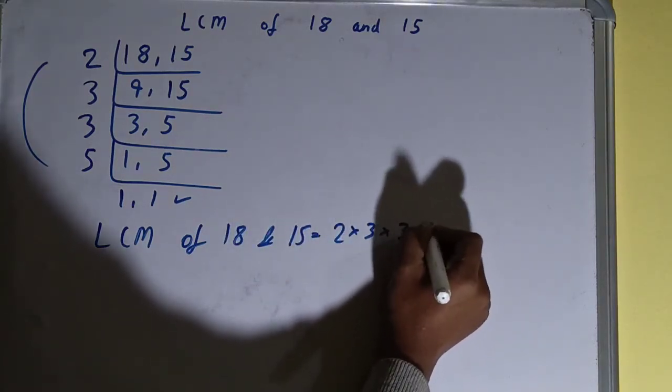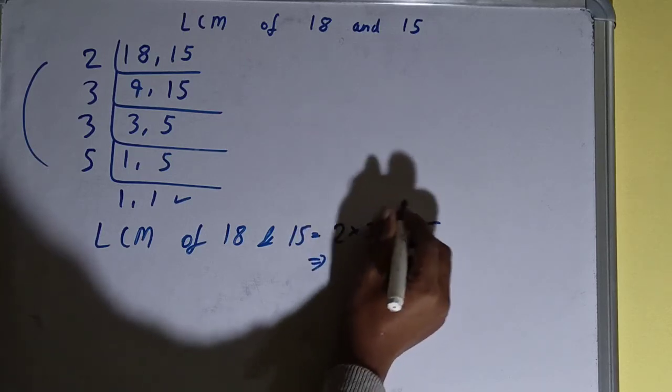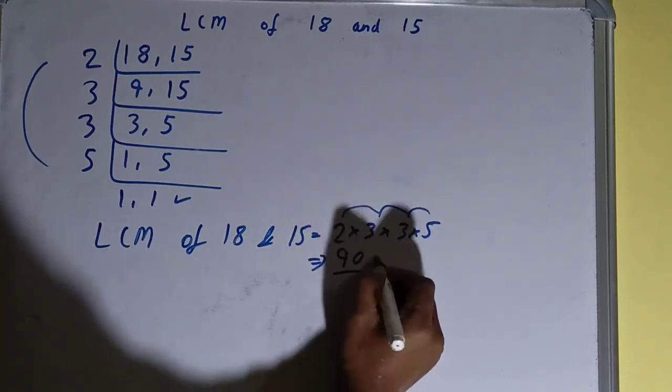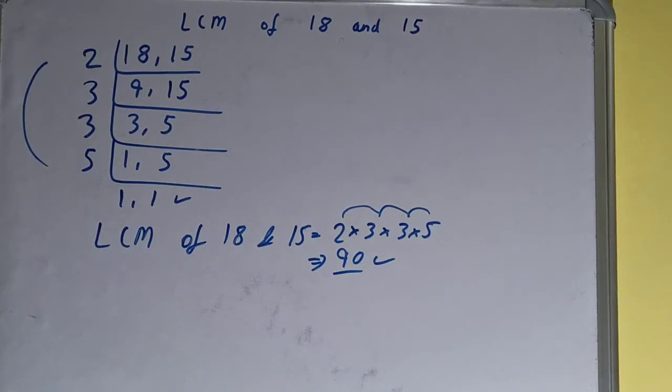5 times 3 is 15, times 3 is 45, times 2 is 90. So the answer or the LCM will be 90. So this is all about LCM of 18 and 15. So if you found the video helpful, please do hit the like button.